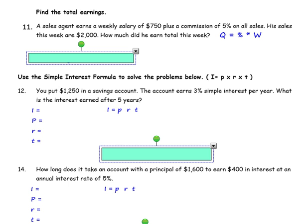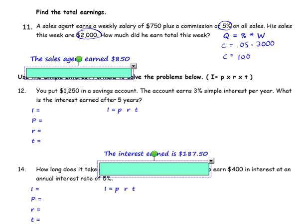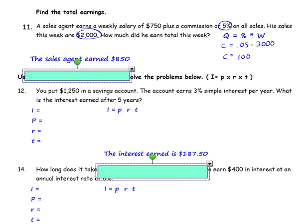Number 11: a sales agent earns a weekly salary of $750 plus a commission of 5% on all sales. His sales this week are $2,000. How much did he earn this week? The quantity is the commission. The percent is the rate, written as 0.05, and W is the sales, which is $2,000. Calculate your answer: the commission is $100. Adding to the salary, the sales agent earned $850.